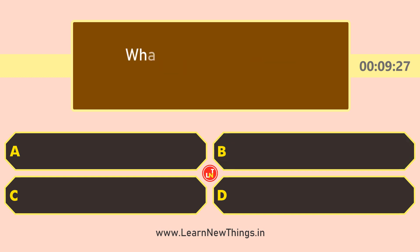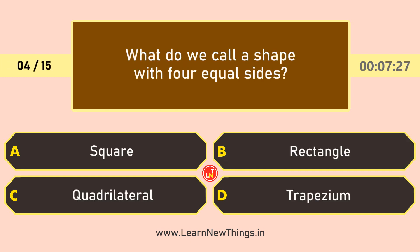What do we call a shape with 4 equal sides? The answer is a square.